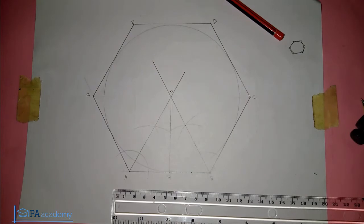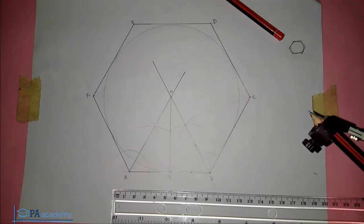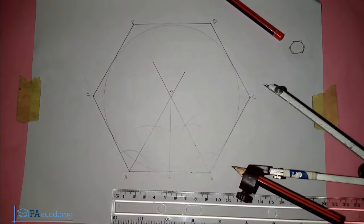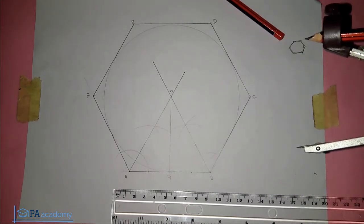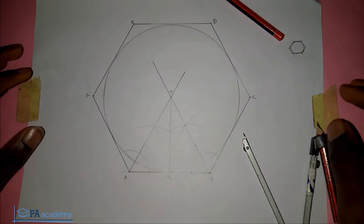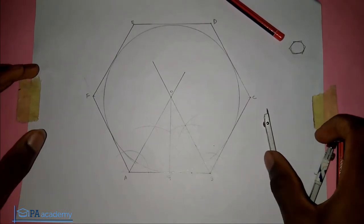You can see we've been able to inscribe a circle inside a hexagon. Let me just make it bold so the circle is clearer now.